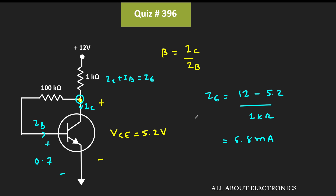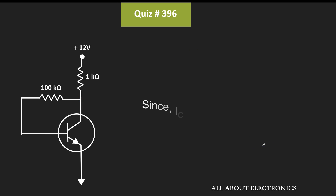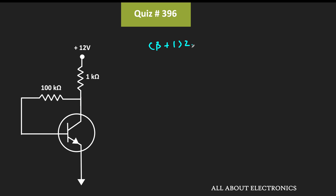So IC plus IB, or the emitter current, is equal to 6.8 milli-ampere. We can say that (beta + 1) times IB is equal to 6.8 milli-ampere. Now to find the value of beta, let us find the value of the base current.